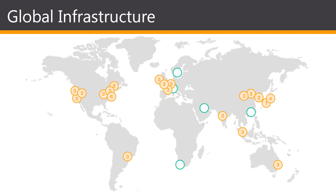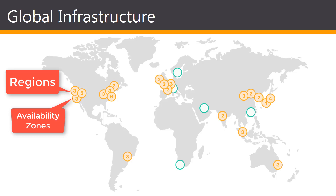Looking briefly at the global infrastructure that Amazon Web Services offers — AWS serves over a million active customers in more than 190 countries and is steadily expanding its global infrastructure to help customers achieve low latency and high throughput. For the exam, the two main things to keep in mind are how the cloud infrastructure is broken up into regions and availability zones. A region is a physical location in the world where they have multiple availability zones.